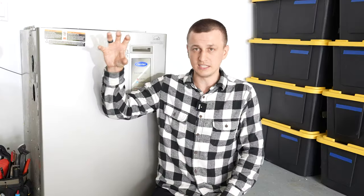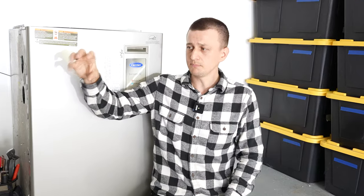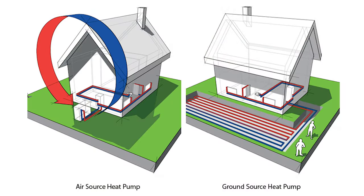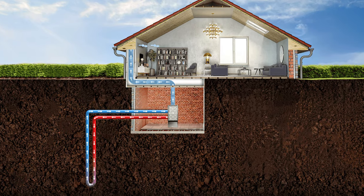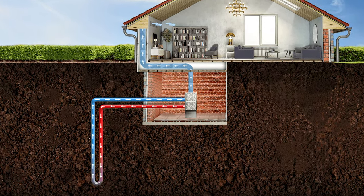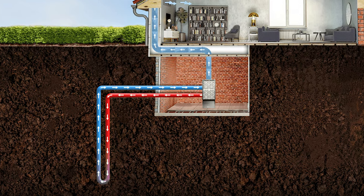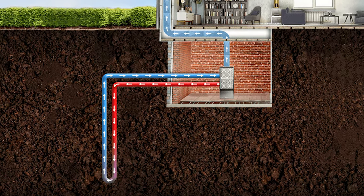They combined a heat pump with a water pump. A heat pump usually transfers heat using air — it absorbs and rejects heat using air as the medium. Whereas a geothermal heat pump, they add a water pump and put a loop of pipes inside of the ground that absorb and reject heat using the ground instead of the air.